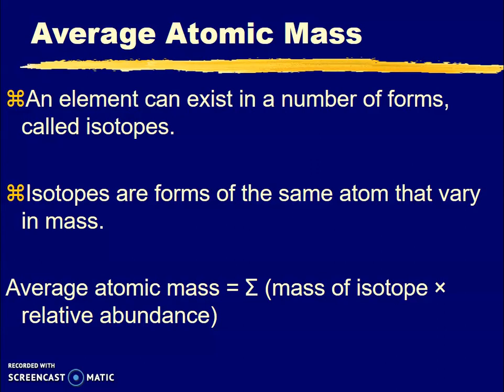What changes is the number of neutrons. There can be varying numbers of neutrons which gives these isotopes slightly different behavior. Your average atomic mass, this is your amu, is what is recorded on your periodic table.